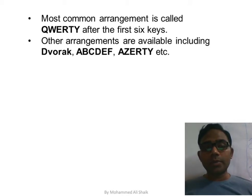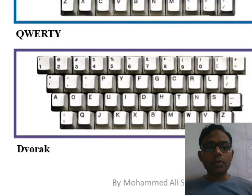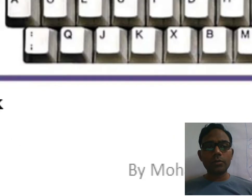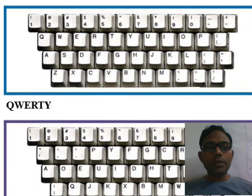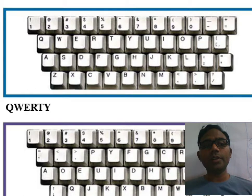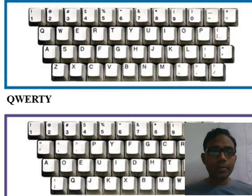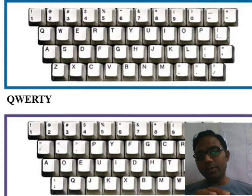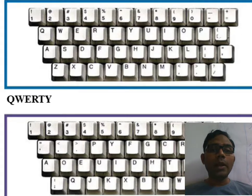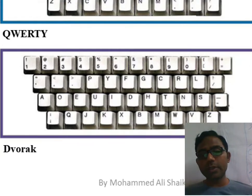Keyboards are of two types: QWERTY and Dvorak. Only the layout of the keyboard is different. In the QWERTY keyboard, the second row spells Q-W-E-R-T-Y, and this is the most widely used keyboard today. The Dvorak keyboard has a different layout.